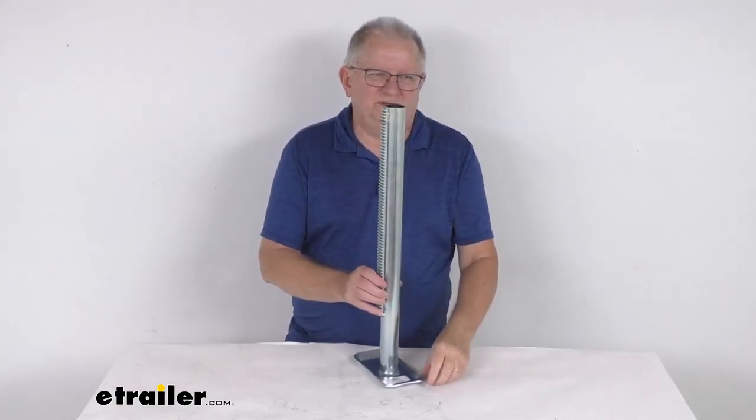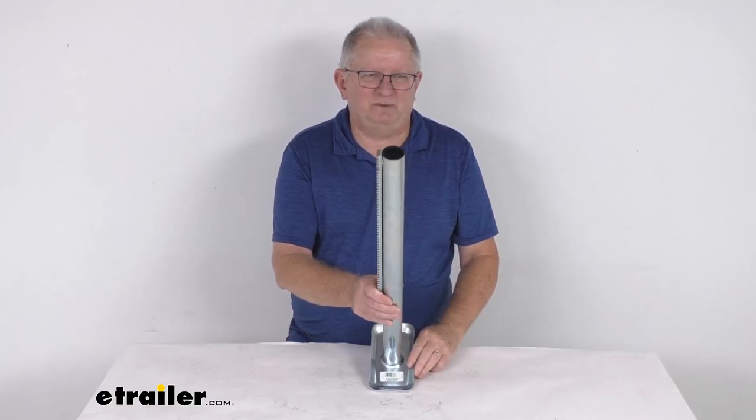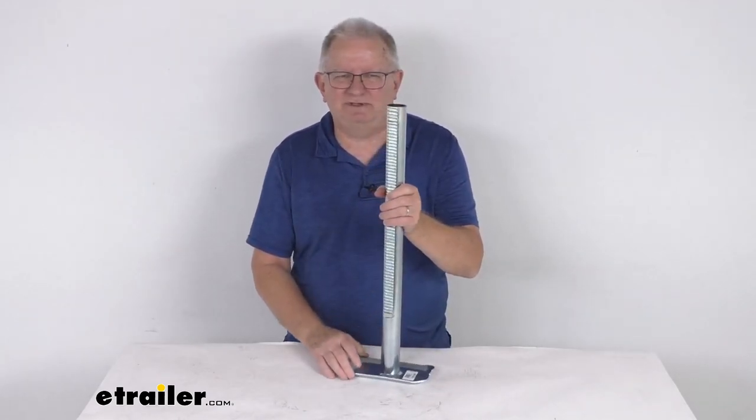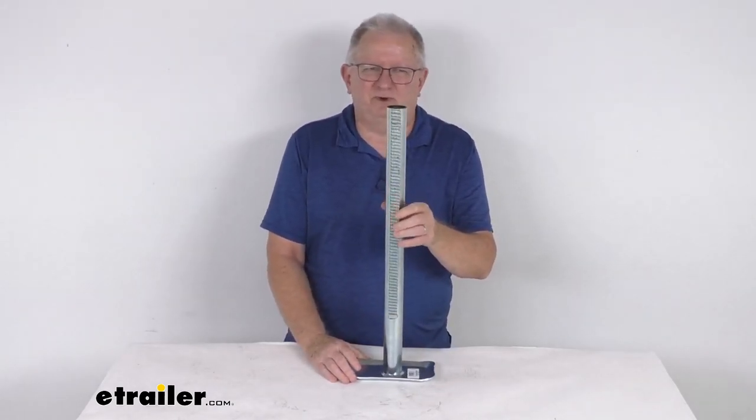That should do it for this look at the Bulldog 23 and a half inch tall rack and post assembly with footplate for your rack and gear jack.